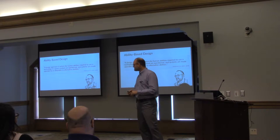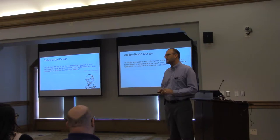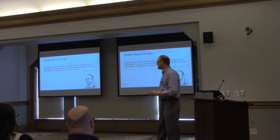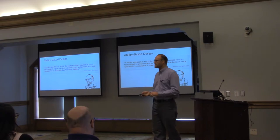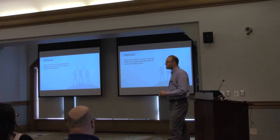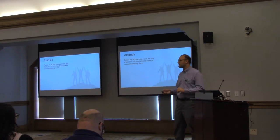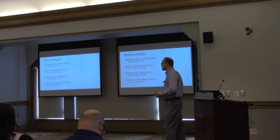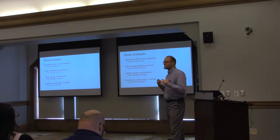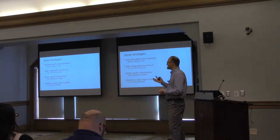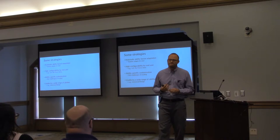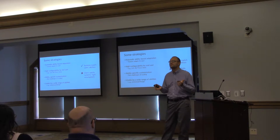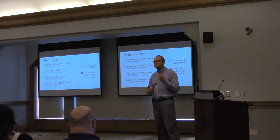Ability-based design is a design approach in which the human abilities required to use technology in a given context are questioned, and systems are made operable by or adaptable to alternative abilities. One aspect is an attitude change — we focus on what all users can do rather than what they can't, and we make systems do the work of accommodating the user. Strategies include automatically adapting interfaces, allowing user configuration, ability-specific customization, and making things usable by a wide range of abilities. Ability-based design is fairly agnostic to which strategy we adopt; it's more that certain principles are upheld, like systems matching users' abilities rather than users satisfying systems' rigid assumptions.